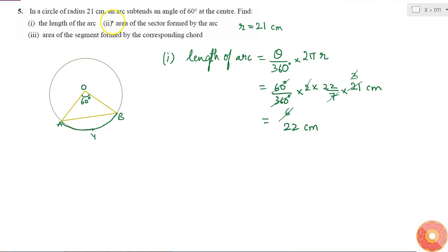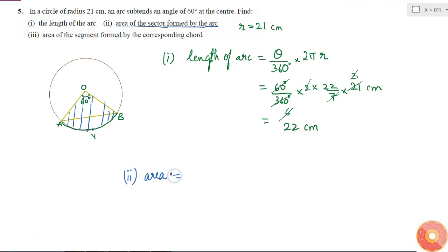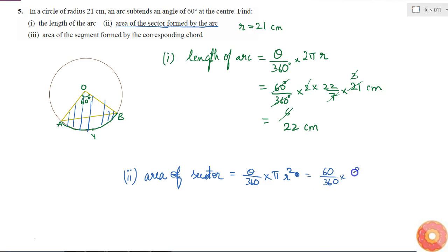The second part is the area of the sector formed by the arc. The area of this sector is theta over 360 into π r squared, which equals 60 over 360 into 22 by 7 into r squared, where r squared is 21 times 21 cm squared.